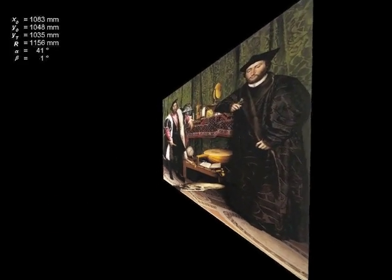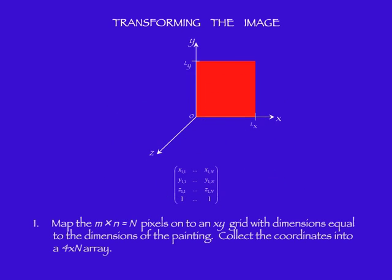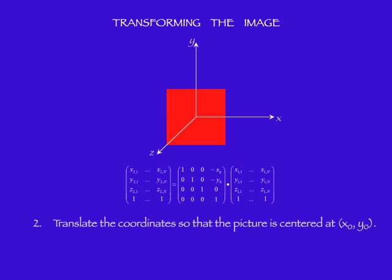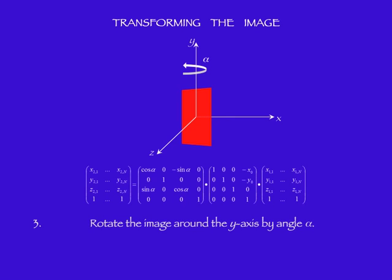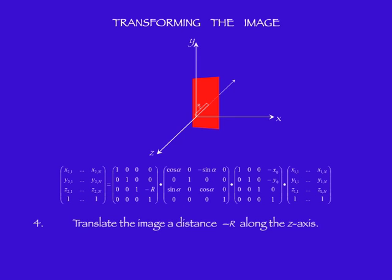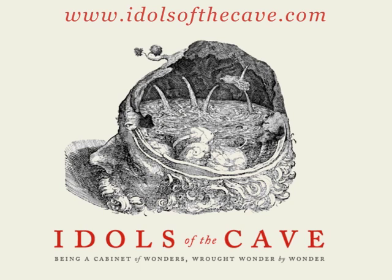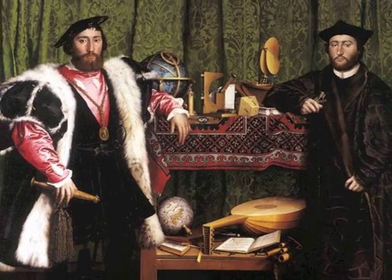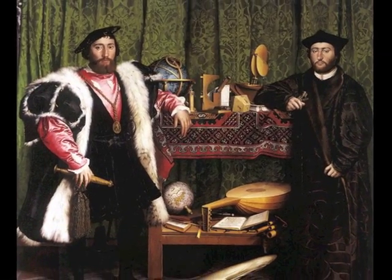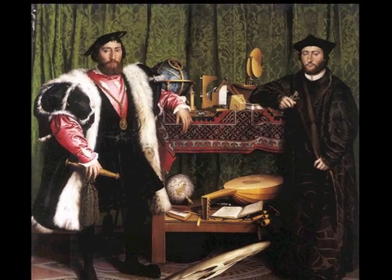The first thing I did was to write a little computer program that simulates how the painting would look when viewed from any location. I did this using MATLAB, and that's also why I made the animations that you see. I realized it would be mostly hopeless to try to give the technical details here, so I put a full explanation of all my steps on my website, idolsofthecave.com, which I encourage you to visit. Once I got the program working, I started playing around with various ways of looking at the painting.